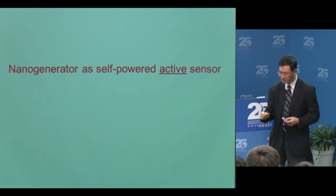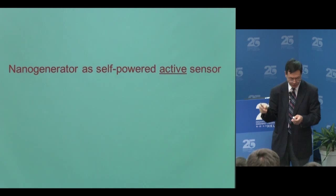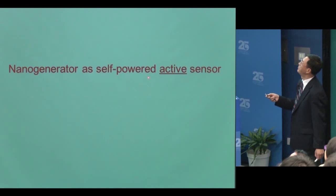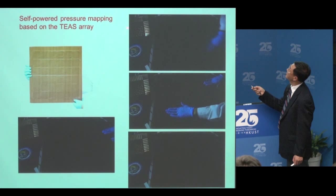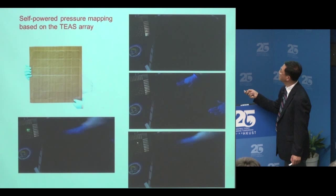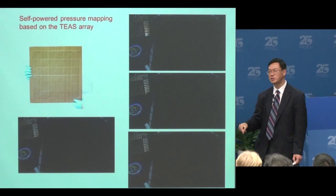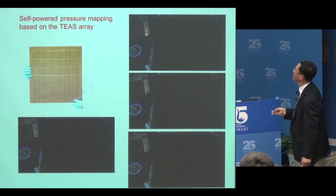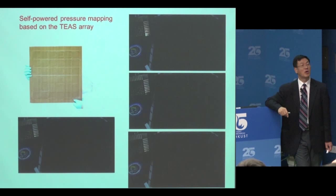The nanogenerator that converts tiny mechanical energy into electricity is also a self-powered sensor. We made a board that you can tap at different parts — the current flash tells you exactly where you tap. Put it underneath the floor — I walk on it and you know exactly where I stand. Self-powered, because the step gives you the electric signal. No video camera needed. This gives a registered position tracker with lots of applications for traffic monitoring, parking lot monitoring, and security.